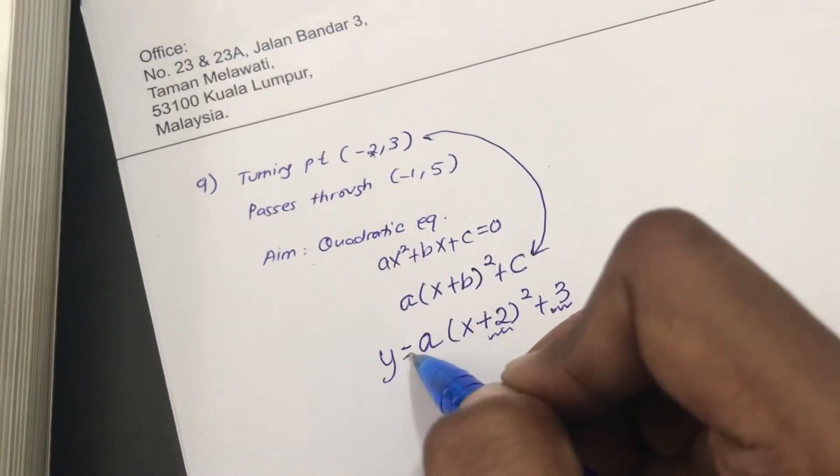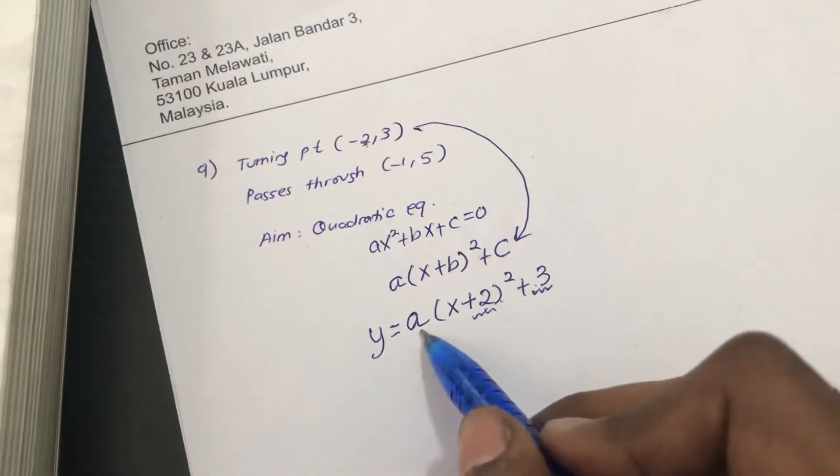Okay, so let's put this as the y. I am almost done. I just need to get the a value.